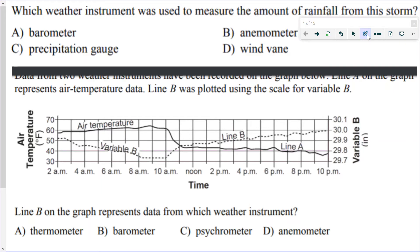Let's go through some practice questions on weather instruments. What weather instrument measures rainfall? They throw four actual instrument names in the answer choices, so you have to know the difference between them. A precipitation or rain gauge measures how much rain fell; a barometer is a pressure meter; an anemometer is a wind speed meter; and a wind vane measures wind direction.